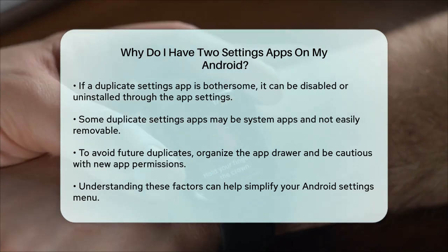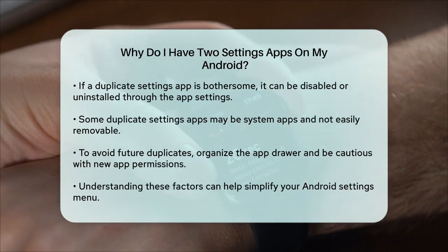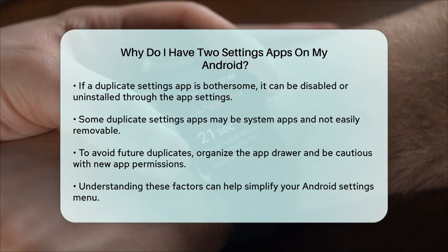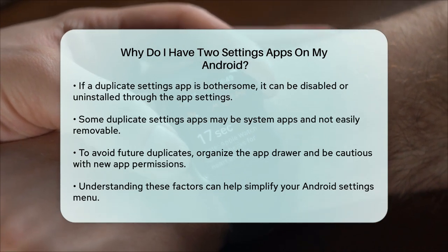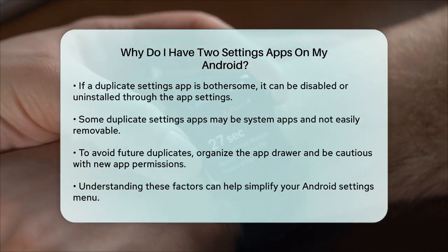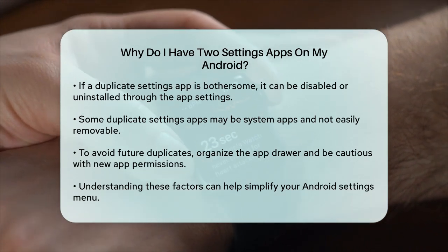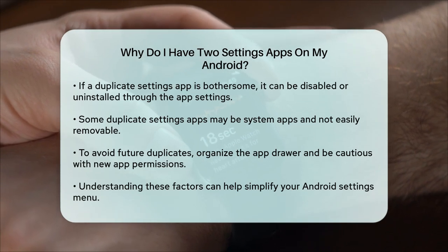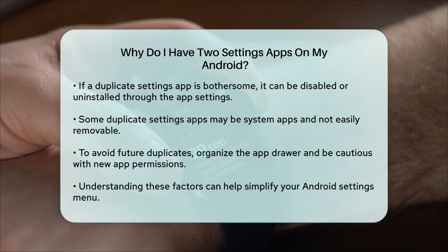To prevent duplicate settings apps from reappearing, be mindful when customizing your home screen with a launcher. Avoid accidentally creating duplicates by organizing your app drawer using folders. Also, pay attention to the permissions requested by new apps you download. By understanding these reasons and taking the right steps, you can simplify your Android device's settings menu and eliminate the confusion caused by duplicate settings apps.